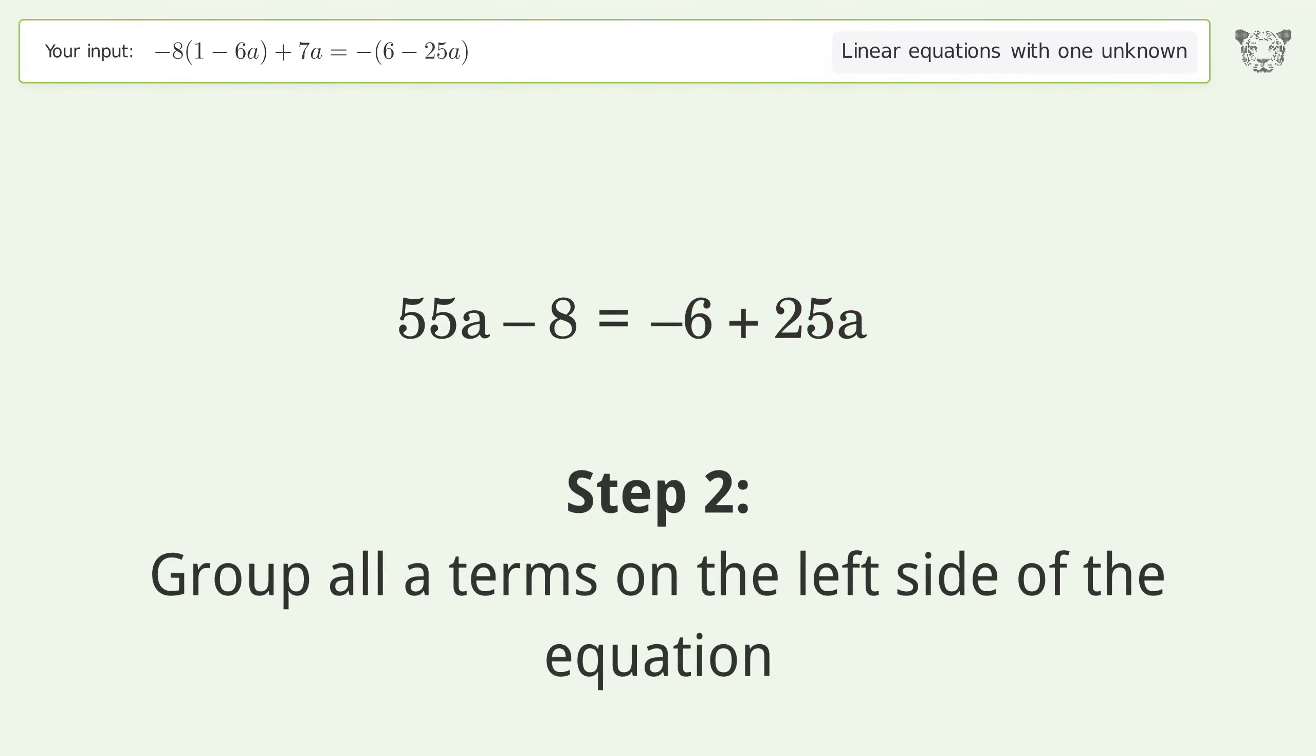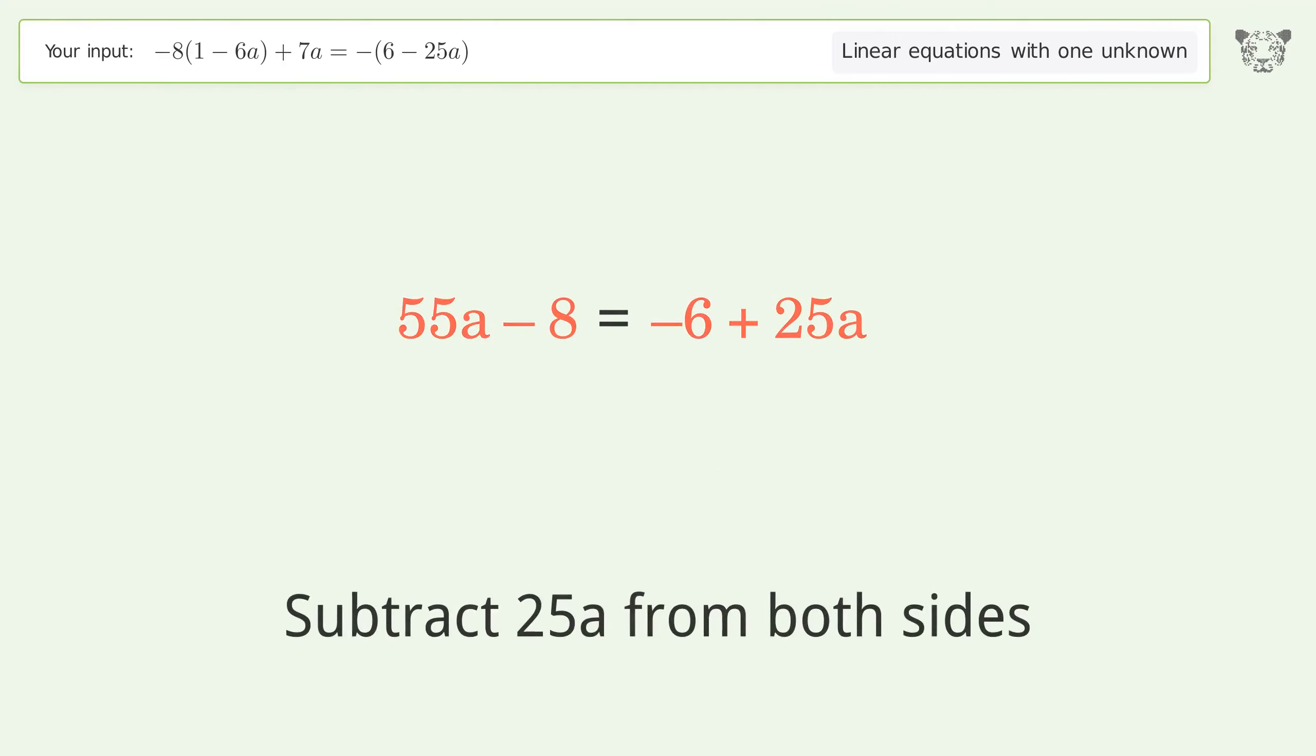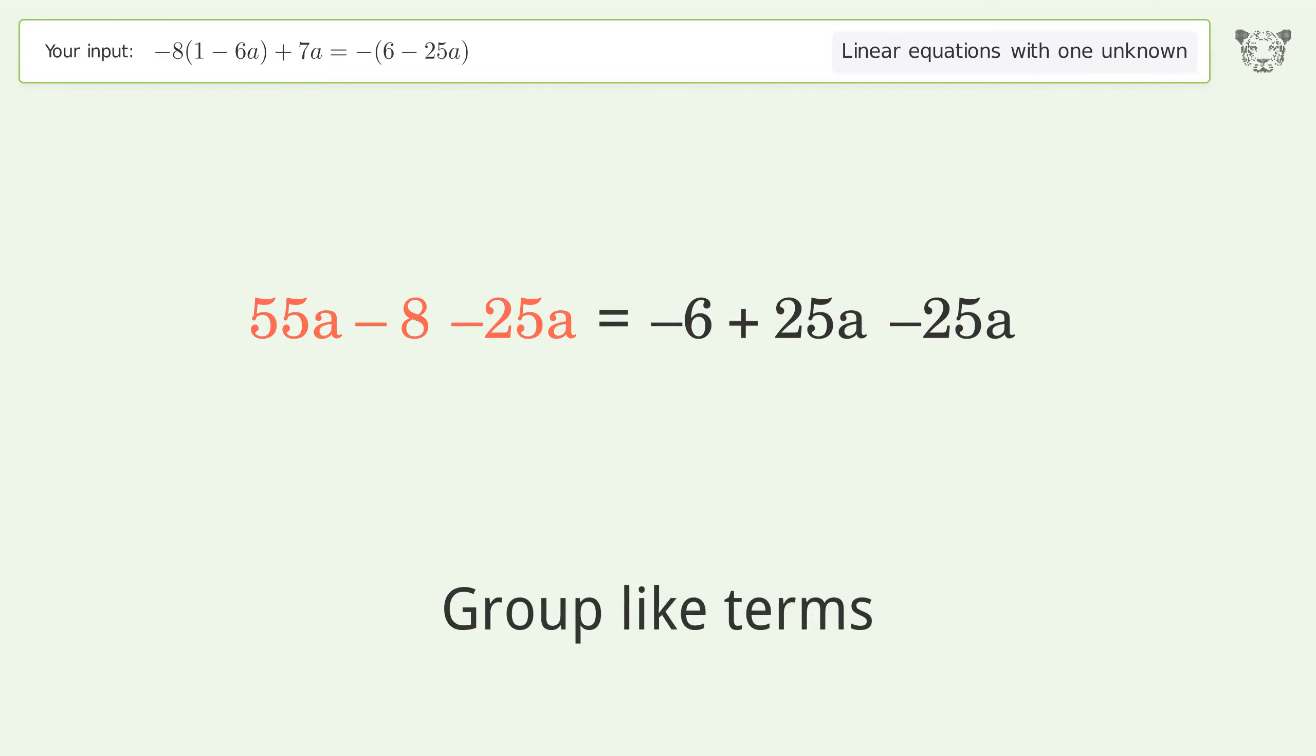Group all a terms on the left side of the equation. Subtract 25a from both sides. Group like terms. Simplify the arithmetic.